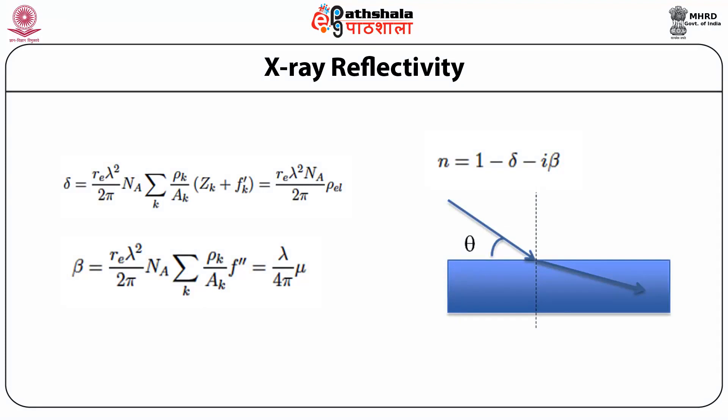In x-ray reflectivity, we have an x-ray impinging on a surface with an incident angle theta, and the refractive index N can be represented as 1 minus delta minus i*beta. Here delta is the scattering power and beta represents the absorption. The average delta is dependent on lambda, the wavelength of incident light, and the average electron density of the material. Beta is dependent on the absorption coefficient mu, and is comparatively very small compared to delta — almost two orders of magnitude smaller.